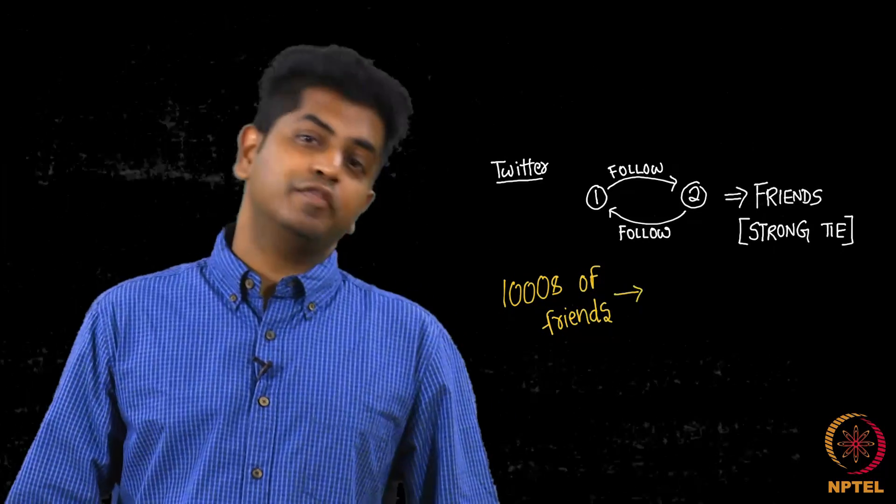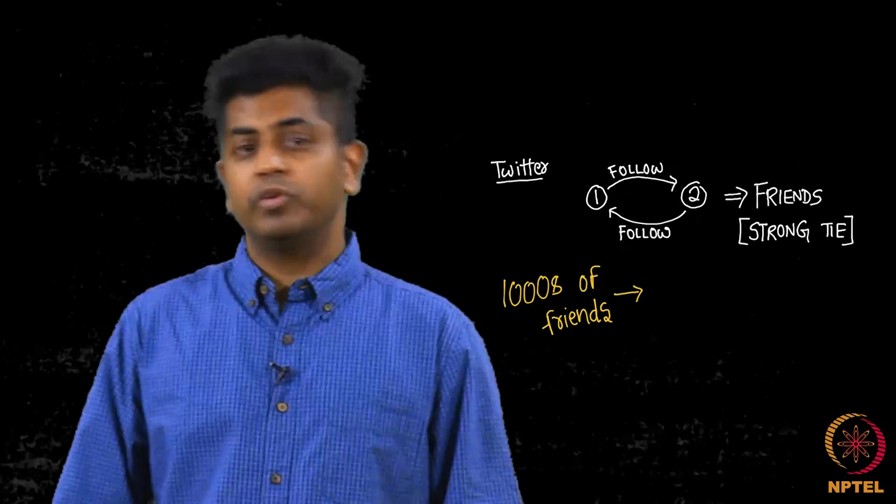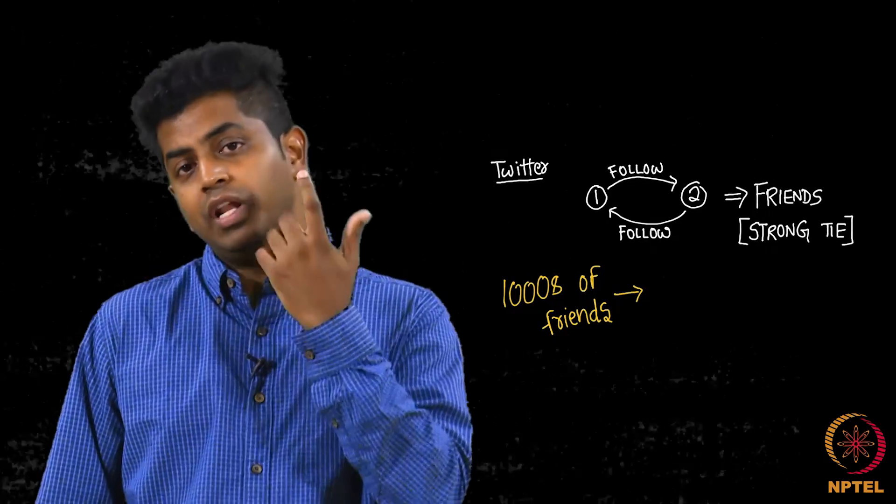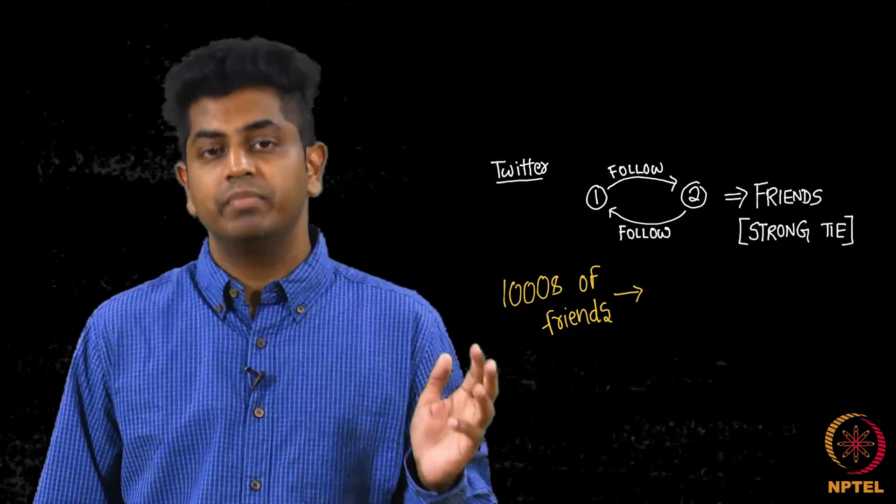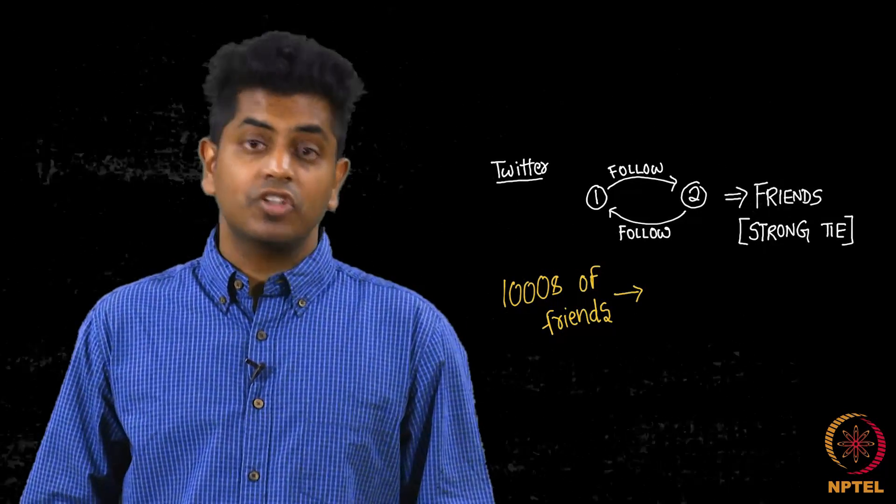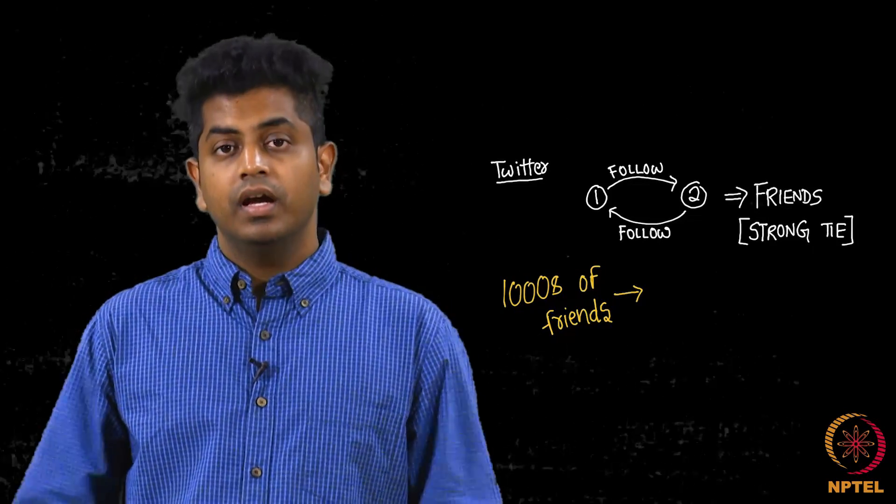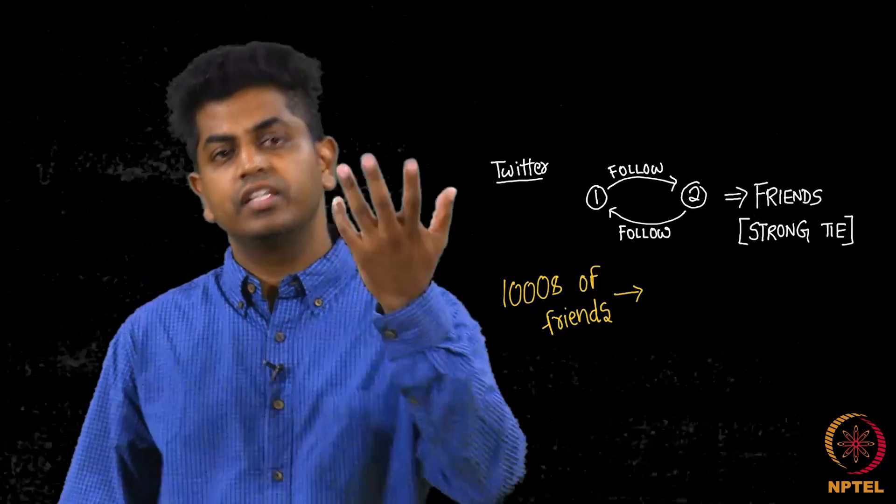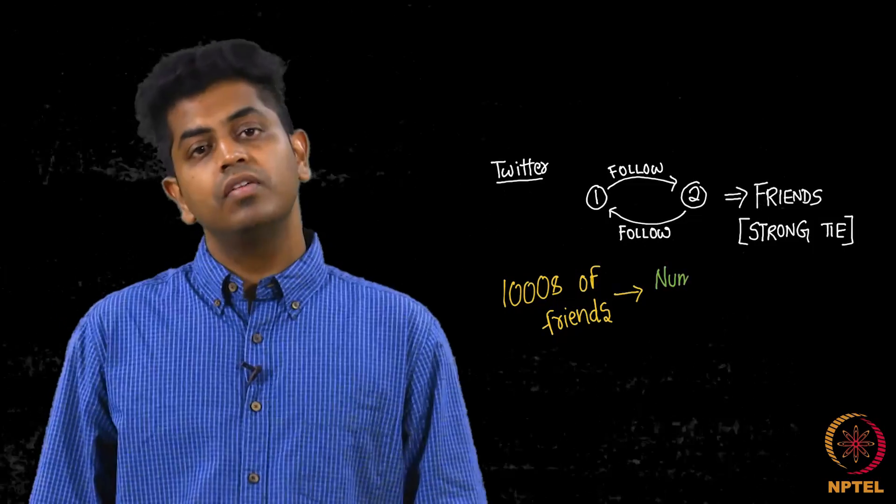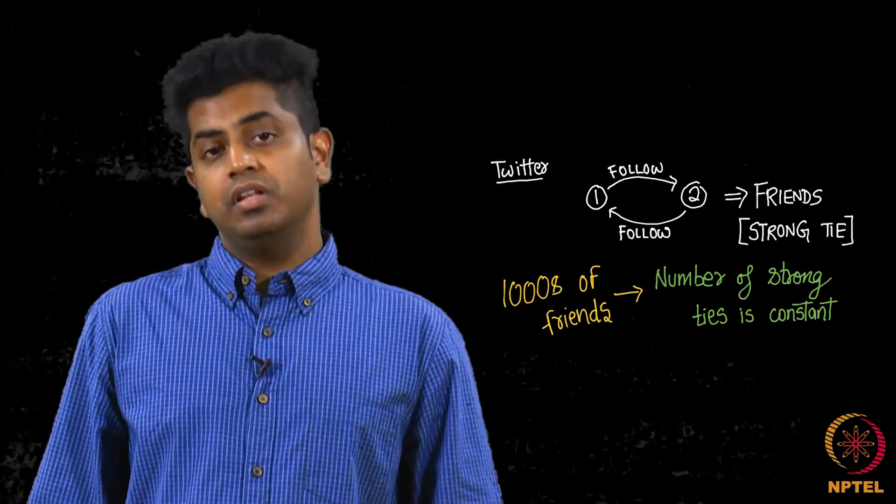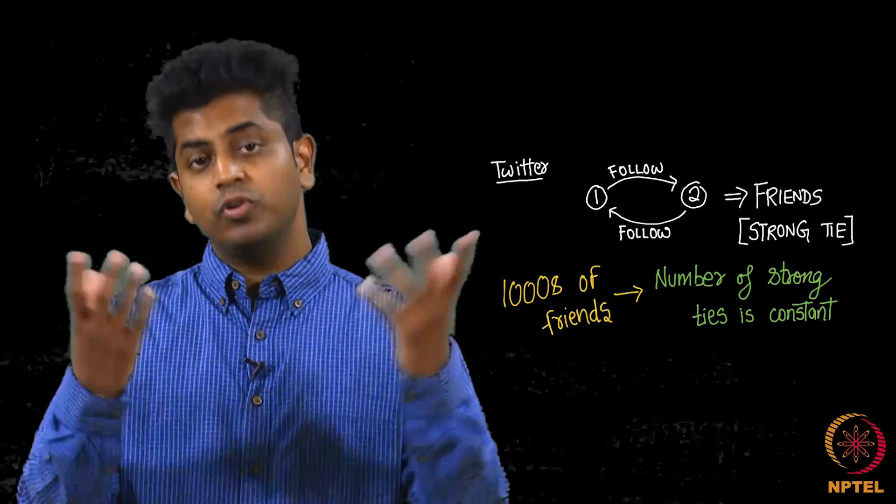People may have thousands of friends. If you see Obama or Donald Trump or Narendra Modi, you will see that they have millions and millions and millions of followers. But you will observe something very startling about all these celebrities. The amount of direct messages that they would have exchanged and hence the strong ties that I defined—I repeat, a link is a strong tie if they have exchanged direct messages with each other more than let us say 3, 4 direct messages. They observed that this seems to be a constant. No matter how many people you are following or being followed, this does not seem to go beyond some 50 or 60. Look at the plot.